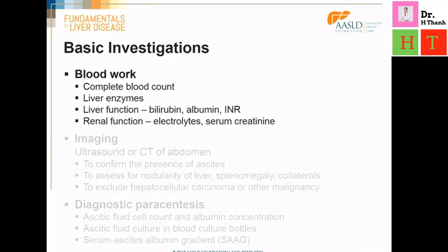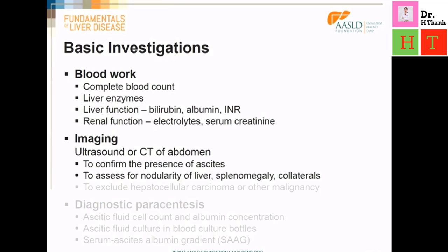Patients with cirrhosis and ascites should also undergo abdominal imaging, be it abdominal ultrasound or abdominal CT scan. Occasionally we may need imaging to confirm the presence of ascites, but it will also confirm cirrhosis as indicated by nodularity of the liver. Portal hypertension is usually indicated by the presence of splenomegaly and collateral vessels. Abdominal imaging is also required to exclude complications such as the development of a hepatocellular carcinoma, and if malignancy is suspected, imaging will confirm or refute its presence.